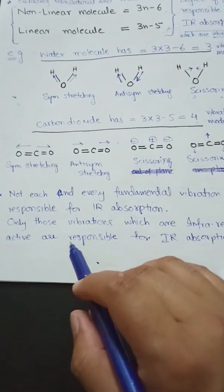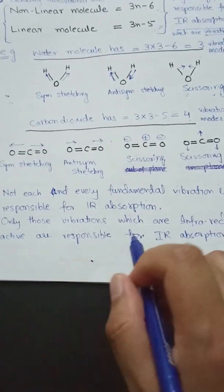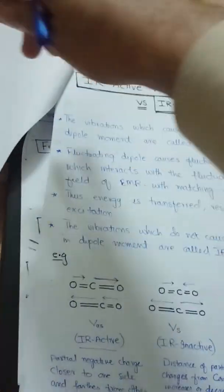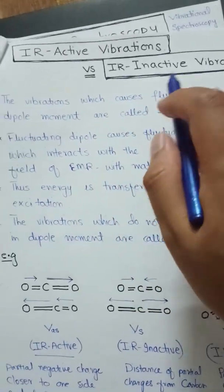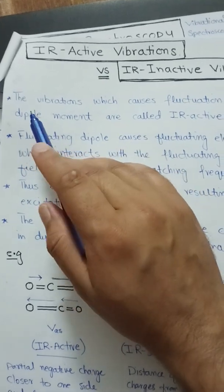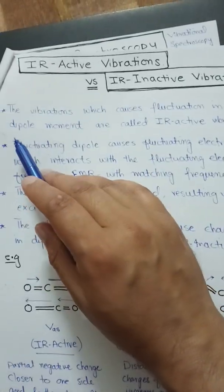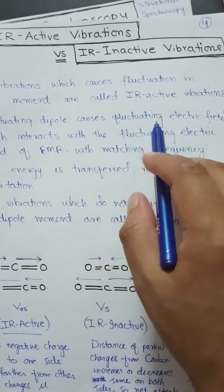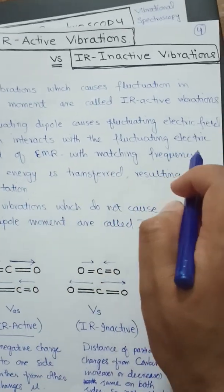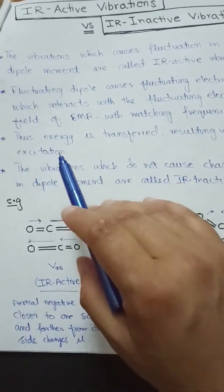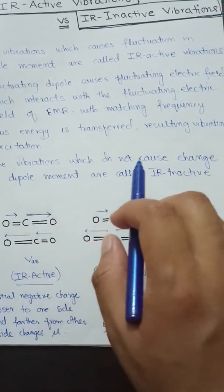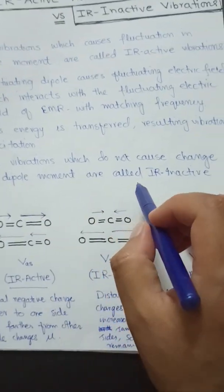Not every fundamental vibration is responsible for IR absorption — only those vibrations which are infrared active are responsible. IR active vibrations are vibrations which cause fluctuation in the dipole moment. The fluctuating dipole causes a fluctuating electric field which interacts with the fluctuating electric field of the electromagnetic radiation at matching frequency, thus energy is transferred, resulting in vibrational excitation. Vibrations which do not cause a change in dipole moment are called IR inactive vibrations.